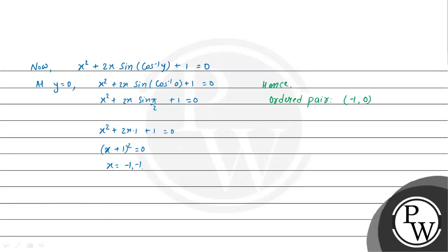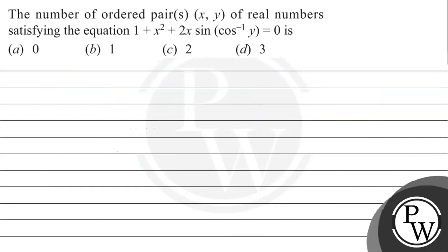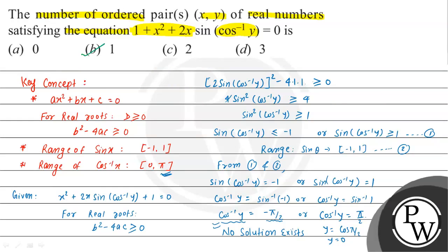So the only solution is x = −1 and y = 0. The number of ordered pairs is 1. This is the answer for the given question. I hope you understood the solution. Best of luck, thank you.